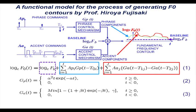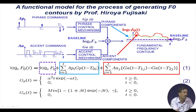This is called the Fujisaki generation process F0 contour modeling. If you remember we said F0 has two kinds of variation — one is called local variation and another one is called global variation. If you see here the green line is the global variation and red lines are local variation. The local variations are called accent and global variation is called phrase. That is why we call it the command response model, which is controlled by the phrase control and accent control mechanism. So one controls the phrase command, phrase command controls the phrase path, and accent command controls the accent path, and there is a baseline.